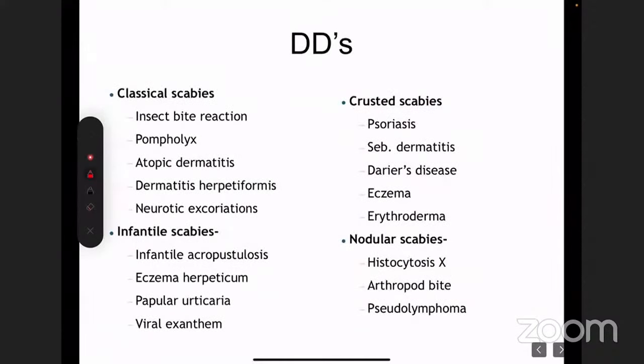Differential diagnosis: scabies is usually a straightforward diagnosis if you have the classical history and examination findings. The history points to ask are nocturnal itching, family history of itching, and the site. On examination, look for the finger web spaces, wrist, axilla, genitalia, lower abdomen, and thighs.